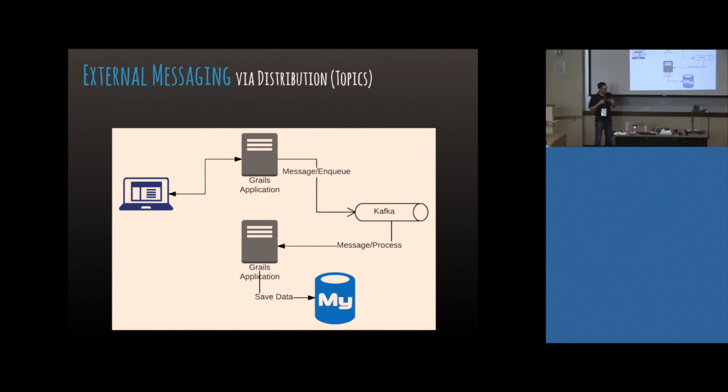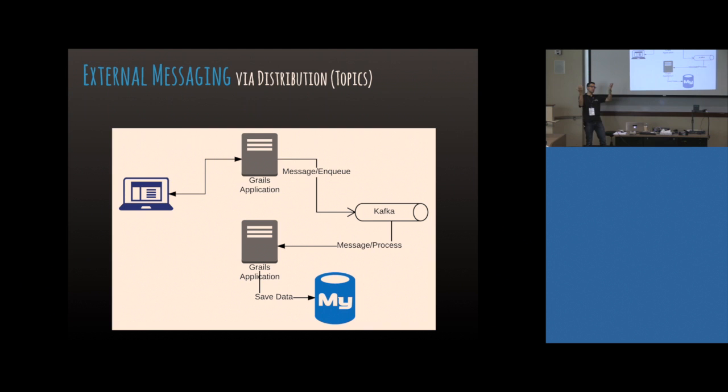That might be another application in your cluster — you've got two web apps, one submits an event, and the event bus isn't busy so it picks up the event and does the work. This one can keep doing other stuff. Or it can be some other system — on the web we submit an order, into Kafka it goes, and the order processing services we build can just be listening for order events.